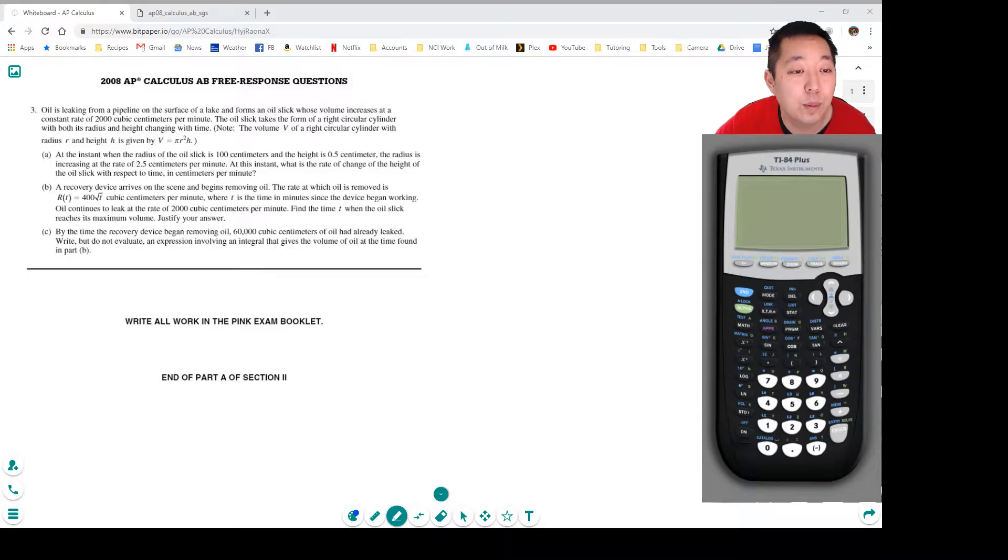Oil is leaking from a pipeline on the surface of a lake and forms an oil slick whose volume increases at a constant rate of 2,000 cubic centimeters per minute. The oil slick takes the form of a right circular cylinder with both radius and height changing with time. Note the volume V of a right circular cylinder is given by this equation.